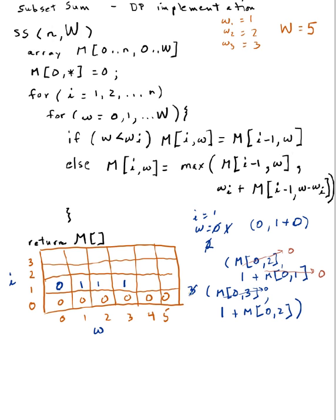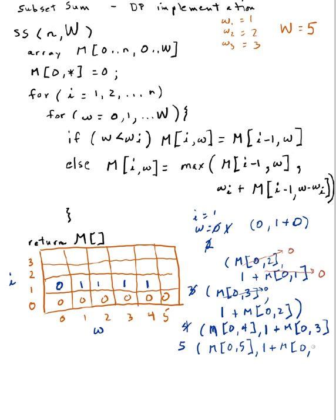w goes to 4. 4 is not less than 1, so m[1][4] is the max of m[0][4] or w sub 1 plus m[0][4 minus 1] which is m[0][3]. Everything in row 0 is 0, so it's 0 or 1 plus 0, giving max of 1. Then w goes to 5. This test fails again, so m[1][5] is max of m[0][5] or 1 plus m[0][4], giving 1.